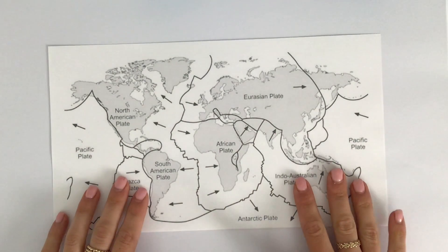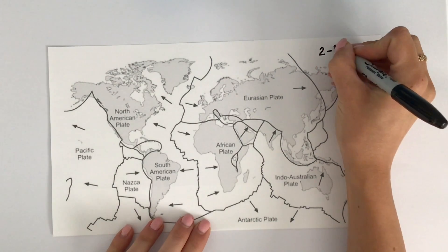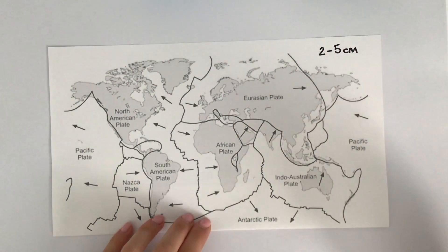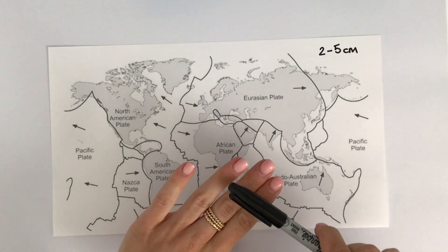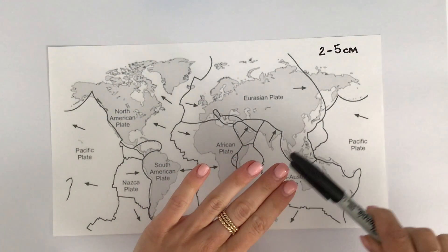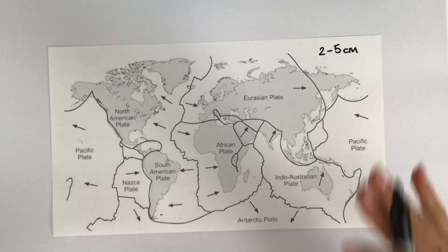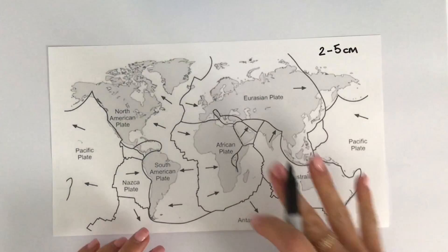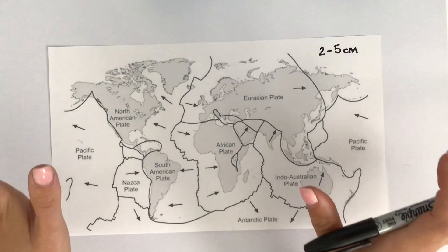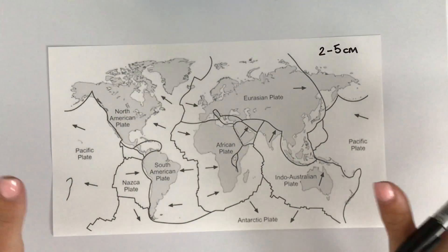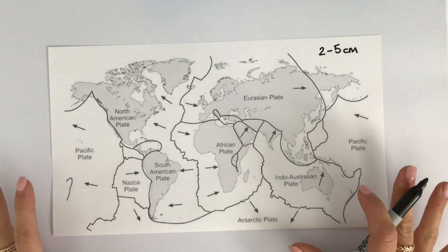Tectonic plates move really slowly — about two to five centimetres per year on average. That's about the same rate that your fingernails grow, so they move incredibly slowly. That's all to do with deep below the earth's crust in your mantle layer — something called convection currents, which we're not going to go into in this video, but it's just something you need to know to understand how these plates move.